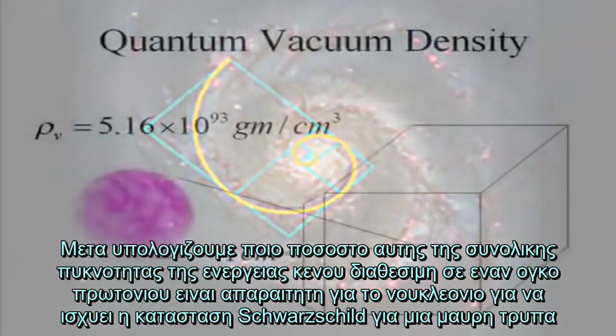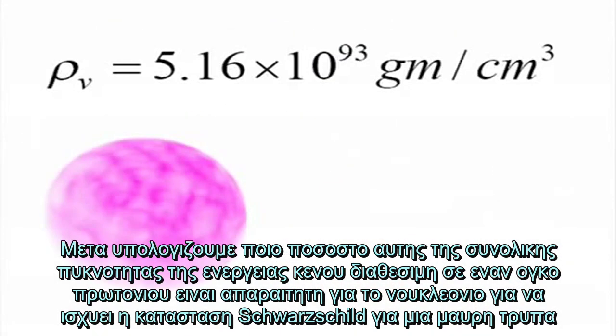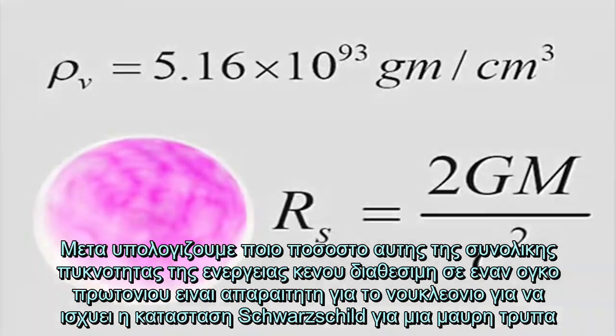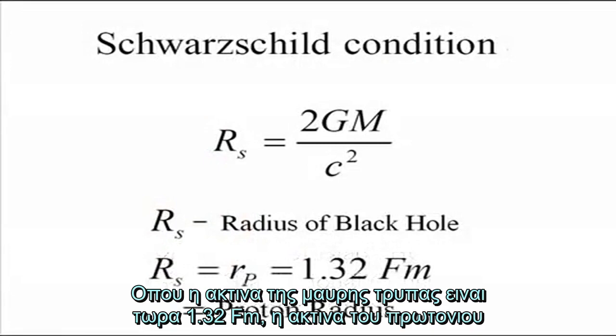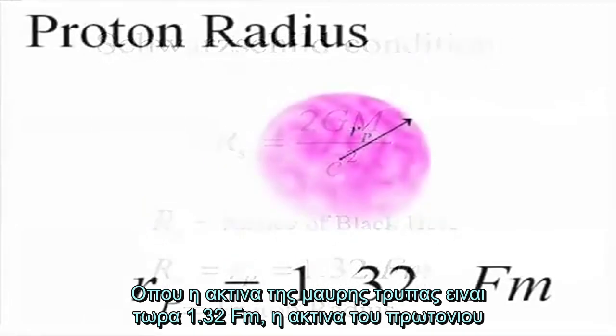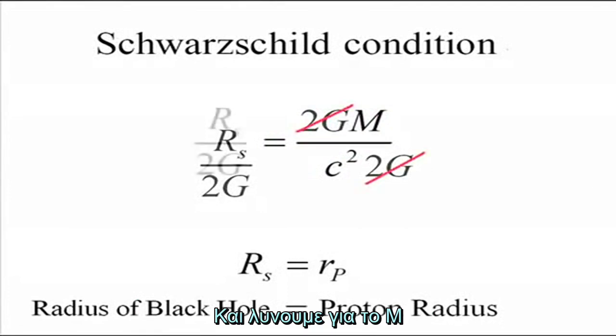We then calculate what proportion of the total vacuum energy density available in a proton volume is necessary for the nucleon to obey the Schwarzschild condition for a black hole, where the radius of our black hole is now 1.32 femtometers, the radius of a proton, and we solve for m.